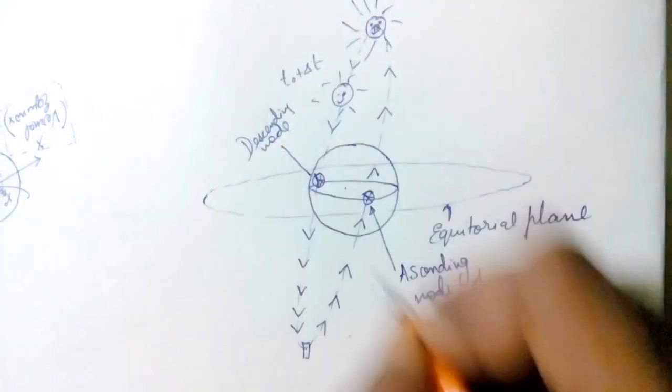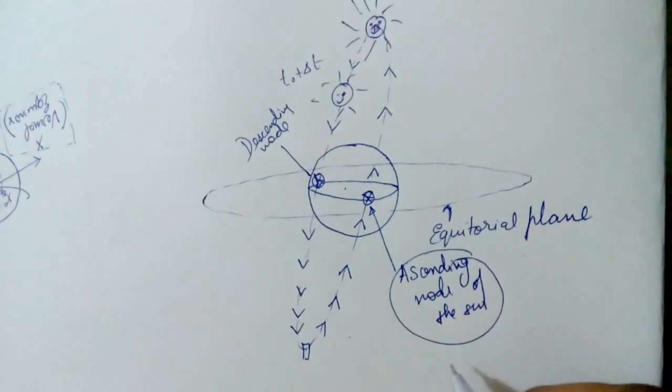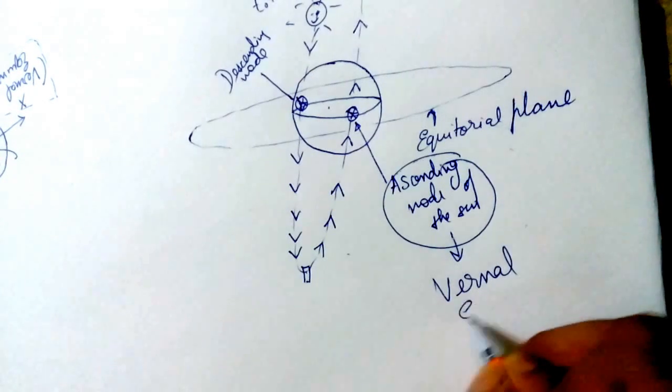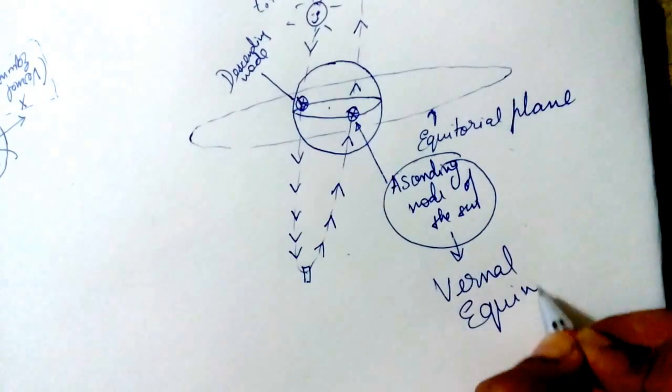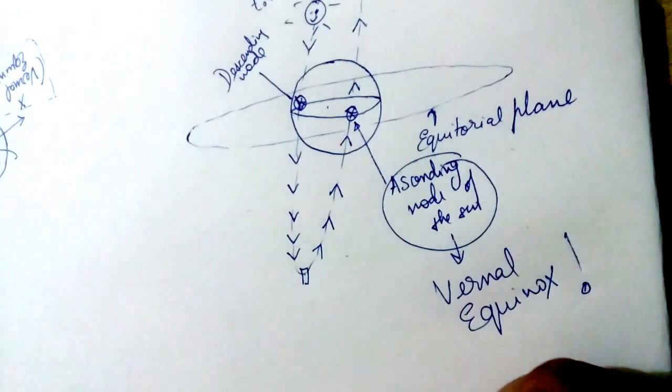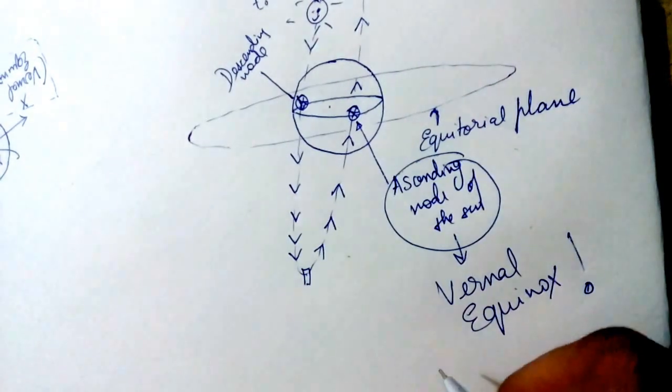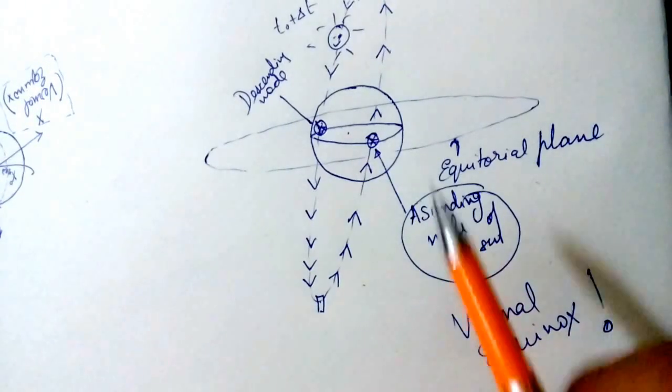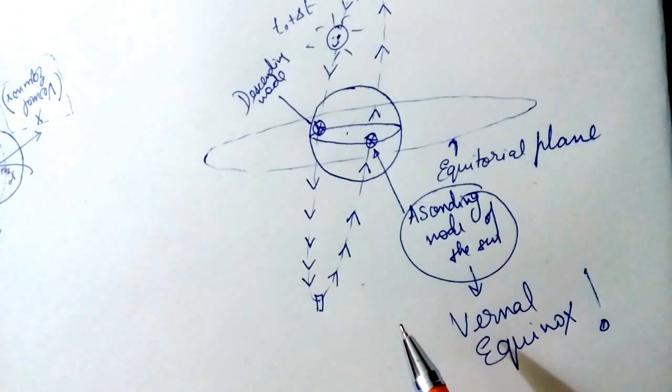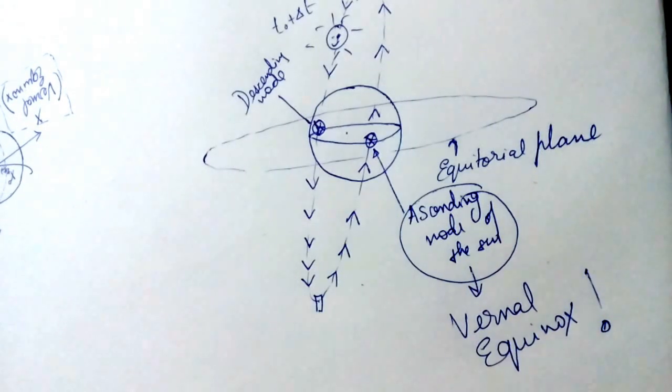Now this ascending node of the sun has got another name, and that name is vernal equinox. So I hope I have made this clear. If you guys have any queries, just drop us a mail and we will try to get back to you. And thank you for watching the video.